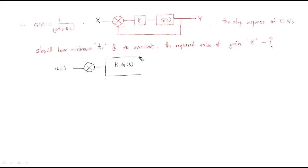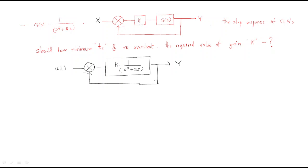The open-loop transfer function is K·G(s) = K/(s²+2s), with unity feedback and output y. A step input is applied. This is a second-order system. For a second-order system with a unit step input, three or four types of responses can be generated depending on the damping.